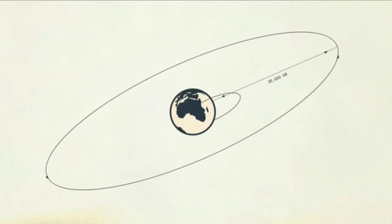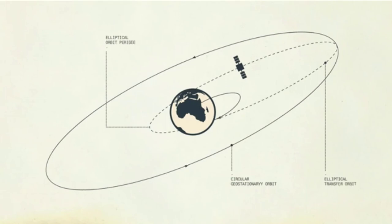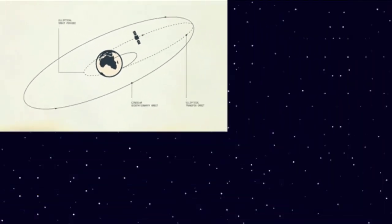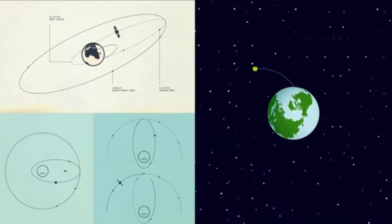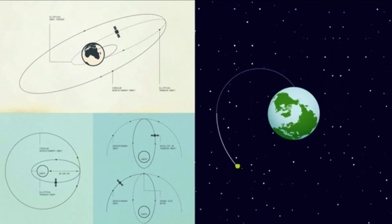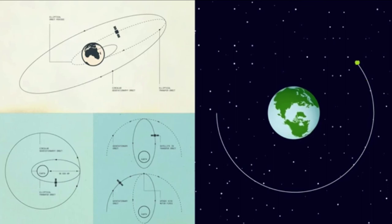If you got it just right and managed to throw an apple to around 36,000 kilometers above the equator, you would find an orbit where your apple is going around at exactly the same angular speed as the earth is turning. This is known as a geostationary orbit.